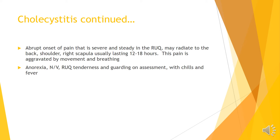Patients usually present with an abrupt onset of severe, steady pain in the right upper quadrant, radiating to the back, shoulder, or right scapula. It may only last 12 to 18 hours, but it's typically enough that they will come to the hospital. They will say it gets worse with movement or breathing. Patients can be anorexic, nauseated, vomiting, have chills and fever, and tenderness and guarding in the right upper quadrant on abdominal assessment.